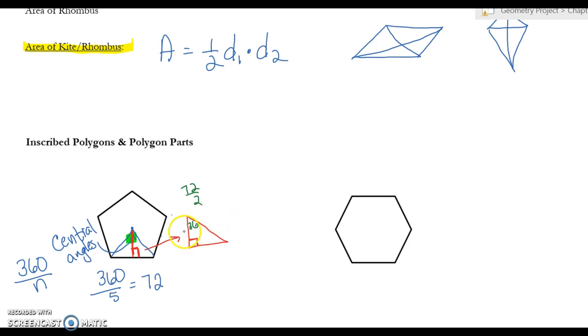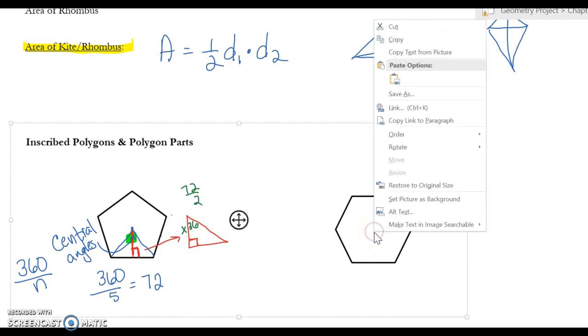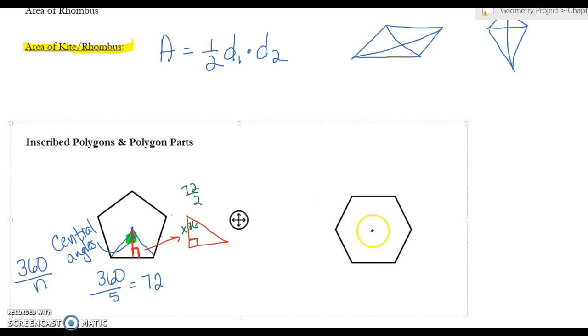So just be ready to find the SOH CAH TOA because I know what that angle is and I'm gonna have to find that apothem. All right, so here we have the same idea. What I'd like you to do though is I'd like you to draw your central angle and figure out the measure of it.